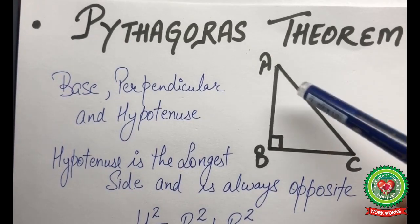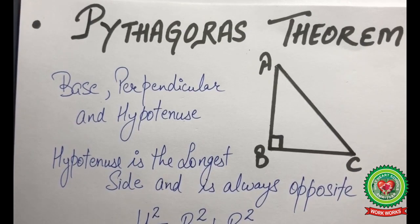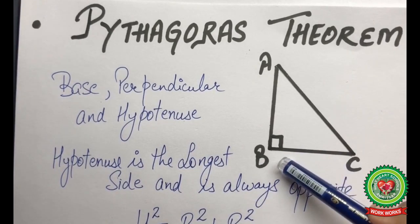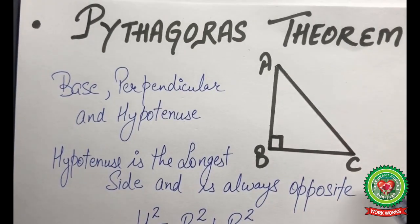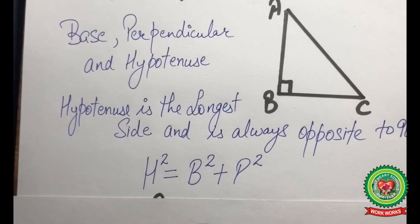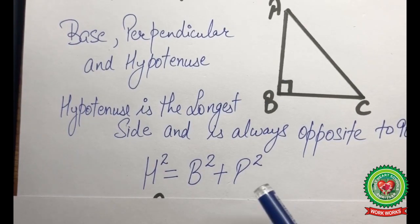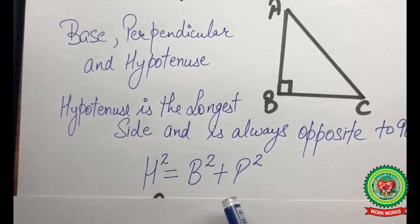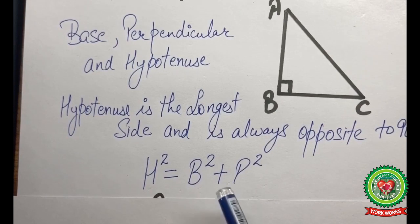For example, triangle ABC is a right-angled triangle with the right angle at B. The side opposite to angle B is AC, so AC is the hypotenuse. Now, Pythagoras theorem states that h² = b² + p²; that is, the square of the longest side equals the sum of the squares of the other two sides.